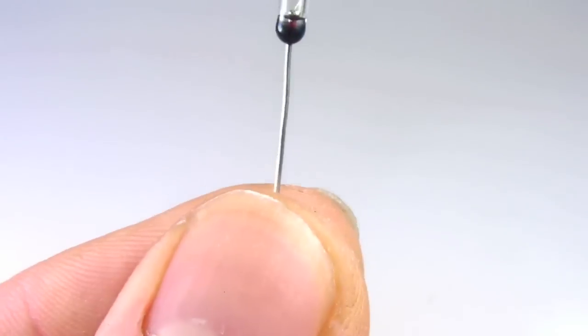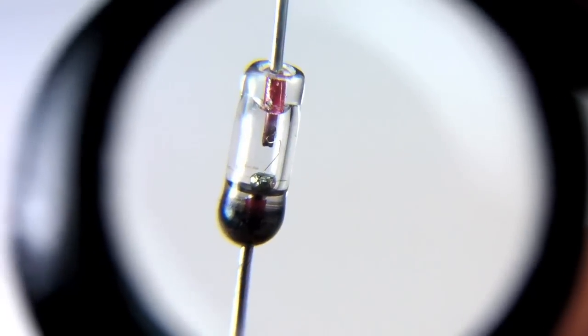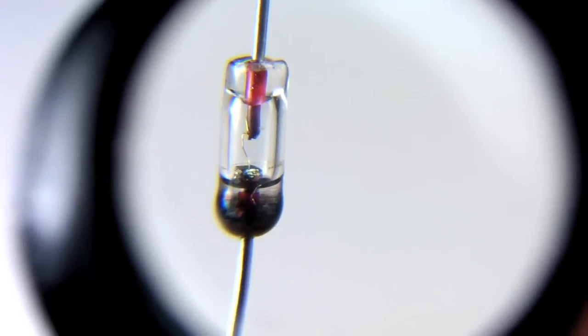Many signal diodes are encased in glass, which makes it pretty easy to take a peek inside. This one here is classified as a point contact germanium diode, so named because it has a metal point held in contact with a germanium semiconductor crystal.